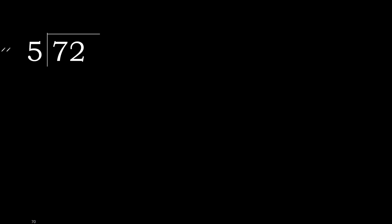72 divided by 5. 7 is not less, therefore with 7: 5 multiplied by which number is nearest to 7 but not greater? 5 multiplied by 2 is 10 — 10 is greater. 5 multiplied by 1 is 5, which is not greater. 7 minus 5 is 2.